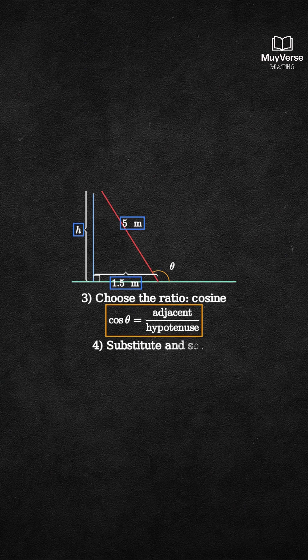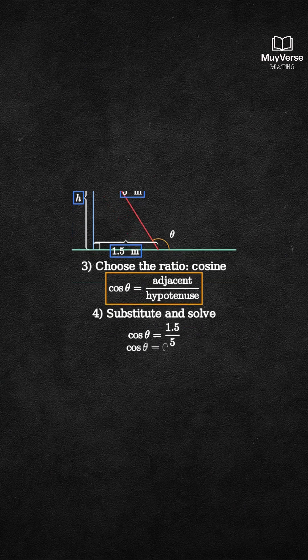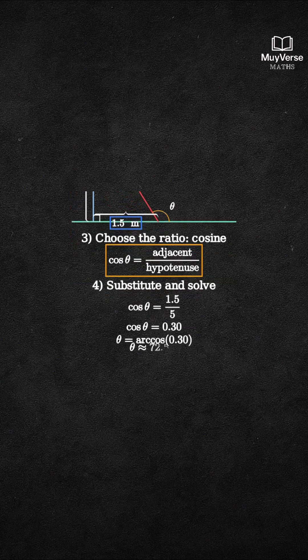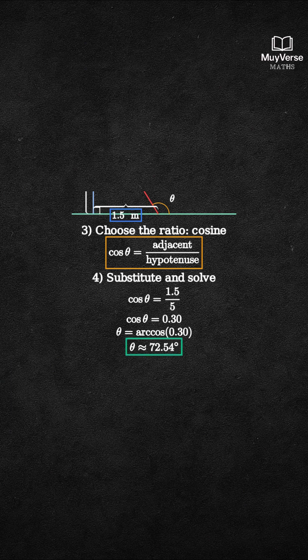Step 4. Substitute the numbers and solve for theta. Cosine theta equals 1.5 over 5, which is 0.30. Therefore, theta equals arc cosine of 0.30. Using a calculator in degree mode, theta is approximately 72.54 degrees.